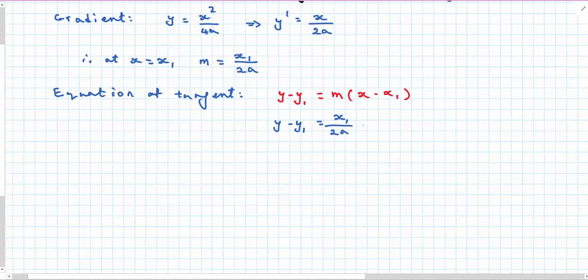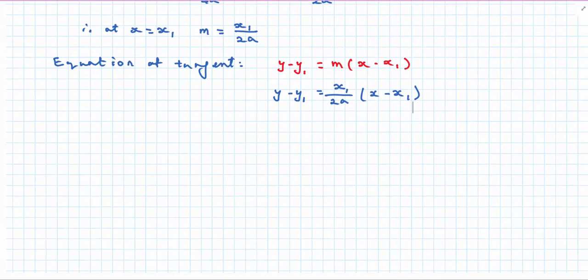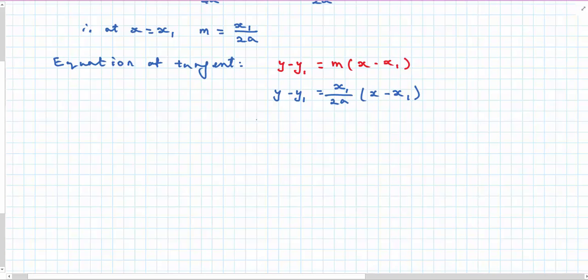All I am doing is substituting the gradient x1 over 2a outside of x minus x1. I am going to multiply the left hand side by 2a. And I end up with 2a times y minus y1 equals x1 times x minus x1 squared.